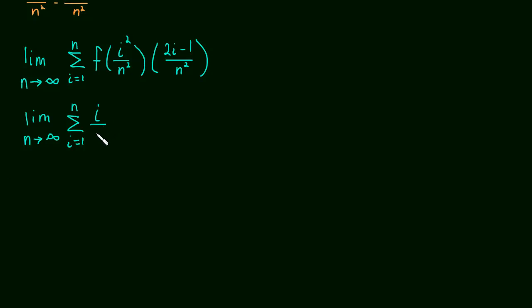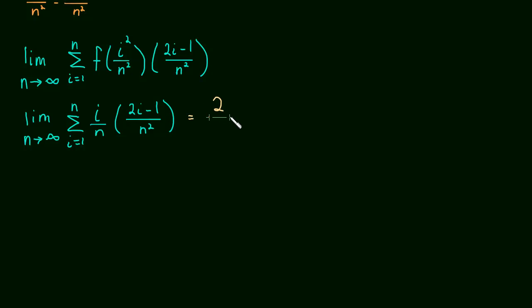This simplifies to i over n times 2i minus 1 over n squared. You can go through the algebra of simplifying this, plugging in the summation formula, and then finally taking that limit, and it should come out to be two-thirds. Why don't you get the practice of doing that and seeing if you can get the right answer of two-thirds.